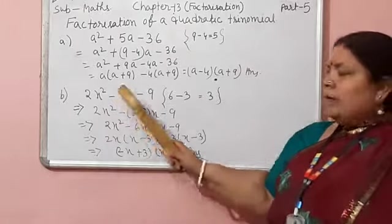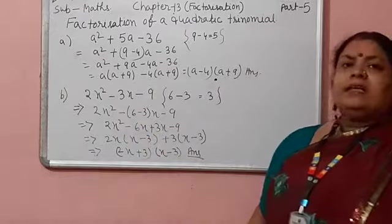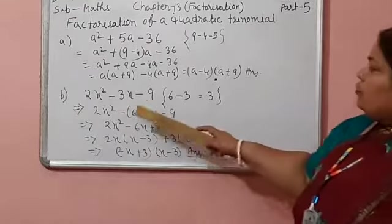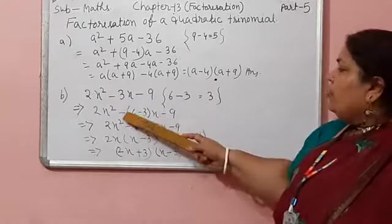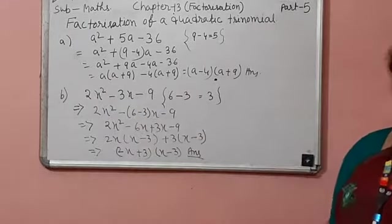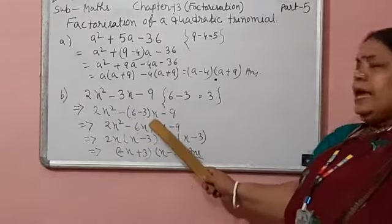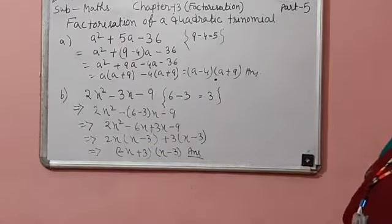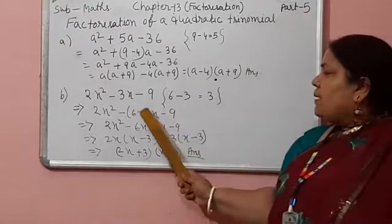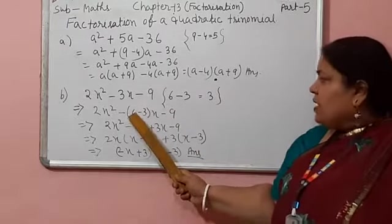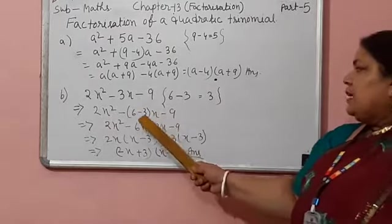2x square minus. Whatever the sign is here, you put the same sign. Then you start the bracket. Now 6 minus 3. Bracket close. X. Minus 9. Now you multiply x by 6 and multiply x by 3 also.